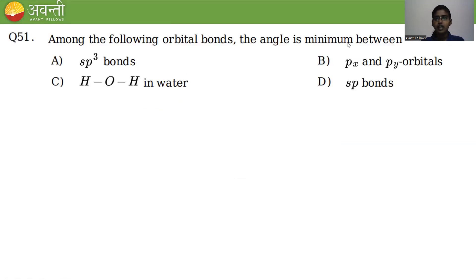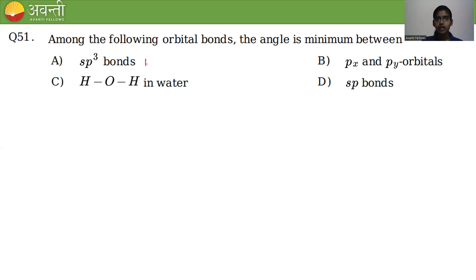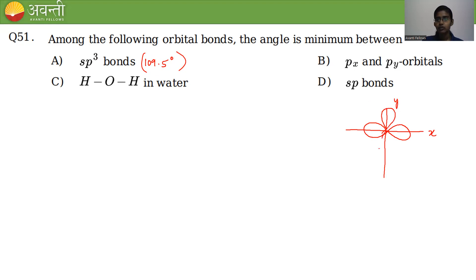Among the following orbitals, the angle is minimum between: option A, sp3 bonds; option B, px and py orbitals; option C, HOH in water; and option D, sp bonds. For sp3, the hybridization gives a tetrahedral structure with bond angle 109.5 degrees. For px and py, if px is along the x-axis and py is along the y-axis, they are perpendicular to each other, so the angle is 90 degrees.